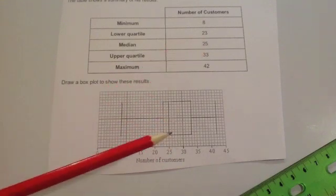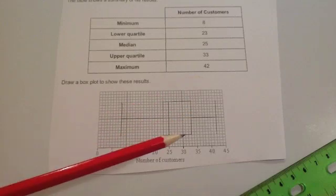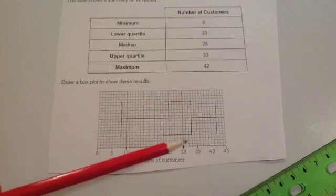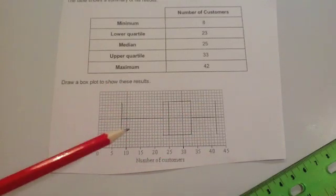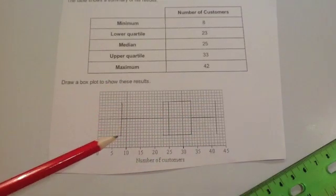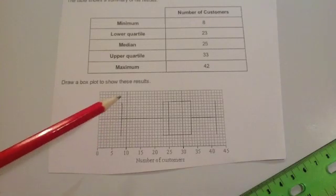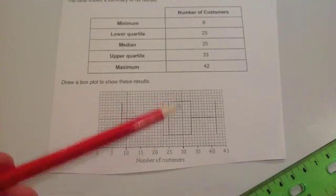There's a line for the median at 25, and a line for the upper quartile at 33, along with the maximum at 42. I've made sure that those lines are exactly the same length as each other.